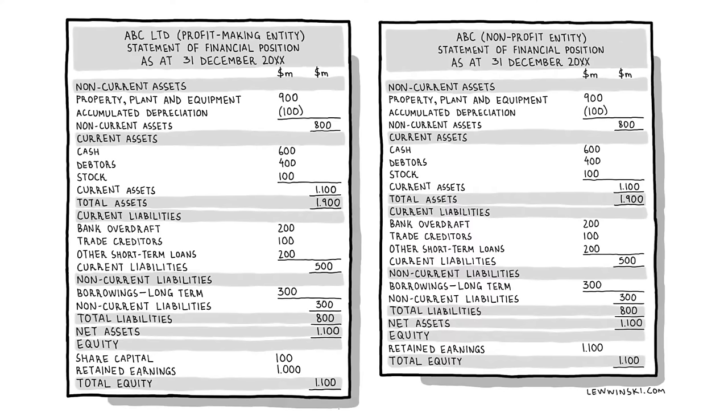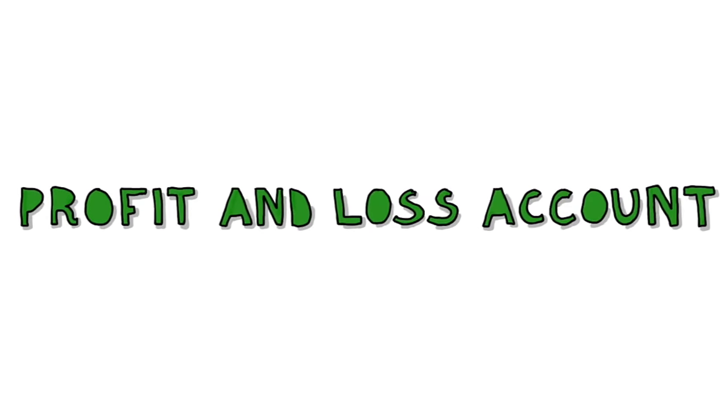In the first part of this class we're going to talk about the purpose of final accounts to different stakeholder groups. First of all, let's figure out what final accounts are. The two types of final accounts are: balance sheet, which shows how much the organization is worth if it was to be sold, and profit and loss account.